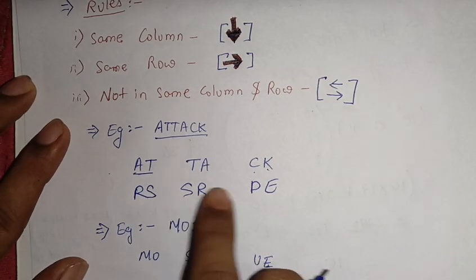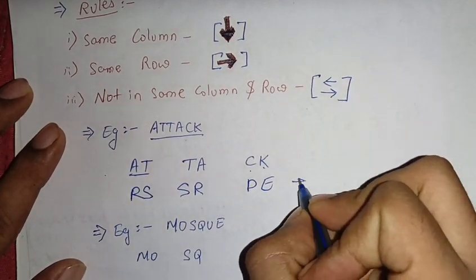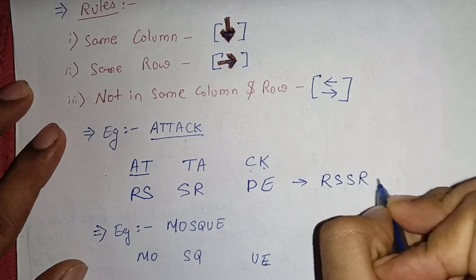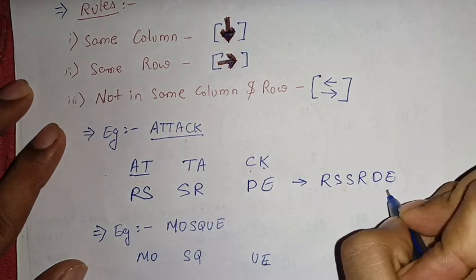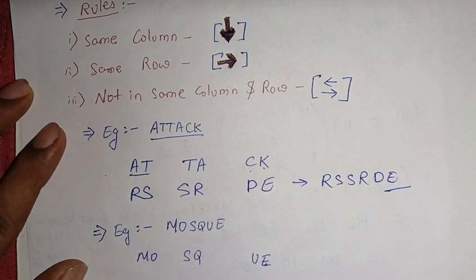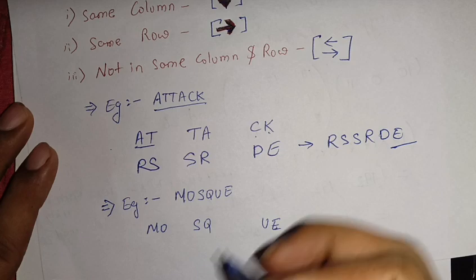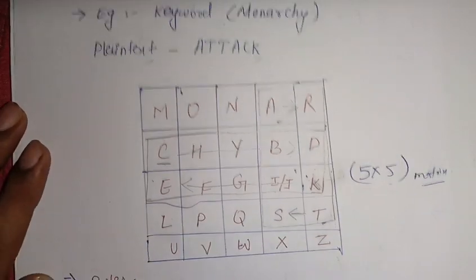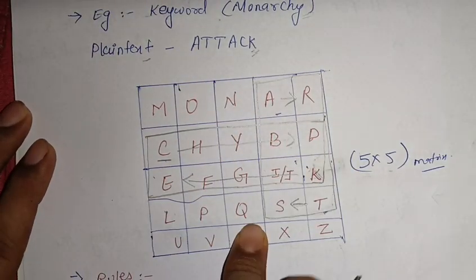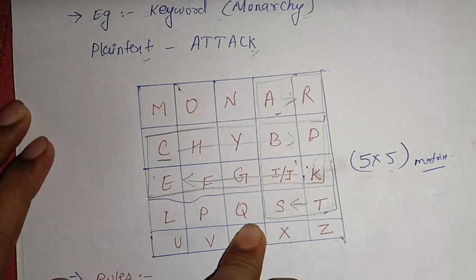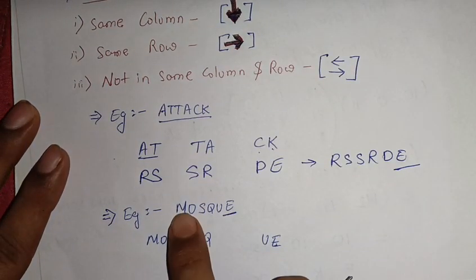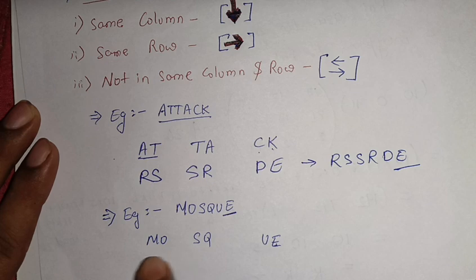So our encrypted text for 'attack' is RS, SR, and DE. Now we'll take another example — 'MOSQUE' — because in the previous example we didn't encounter the same-row or same-column cases. We divide 'MOSQUE' into three pairs: MO, SQ, and UE.